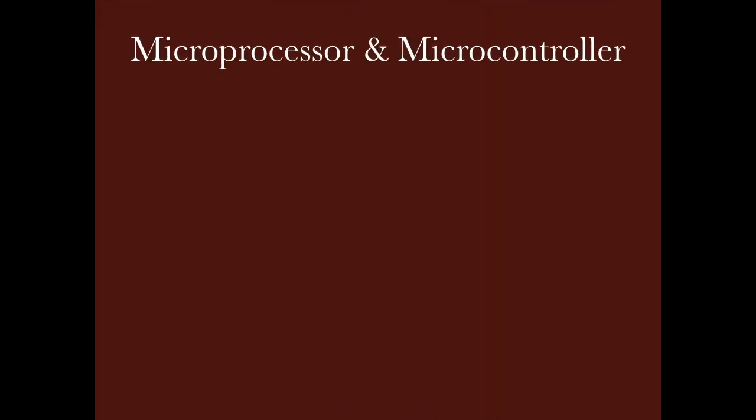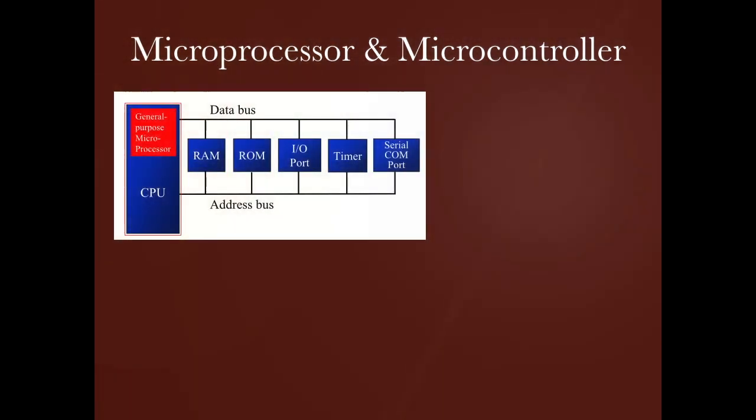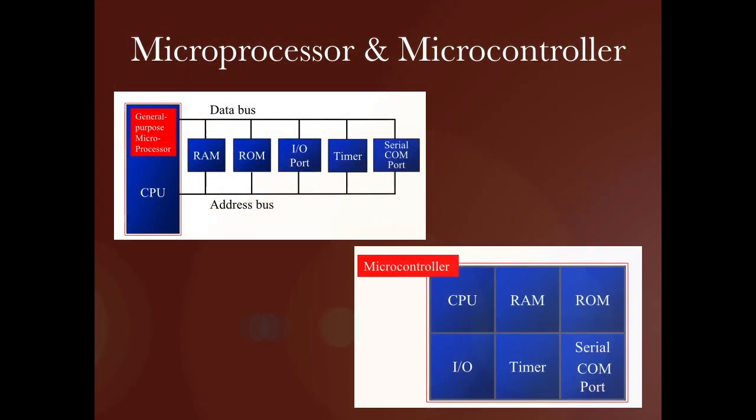Here, both the microprocessor and microcontroller are shown in diagrams. You can see that the microprocessor is a CPU, and with it, externally, RAM, ROM, I/O ports, timers, and serial communication ports are connected. In the microcontroller, all of these are integrated inside on a single chip.